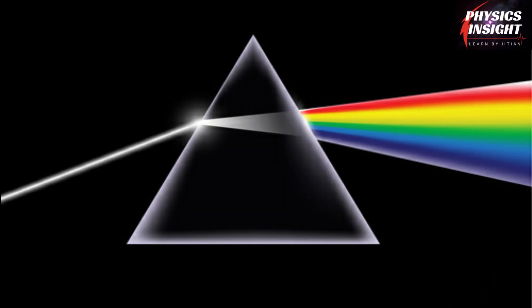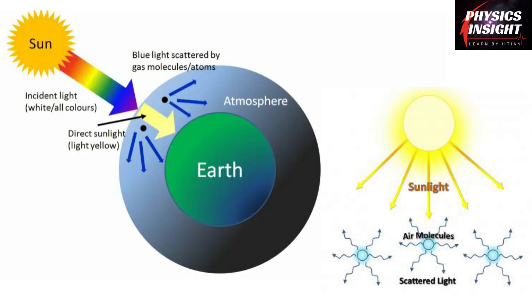We all know white light consists of all colors and our atmosphere contains air molecules or atoms which results in scattering. When white light gets incident on these particles, blue light gets scattered the most due to its low wavelength. And this is the reason that our sky looks blue.